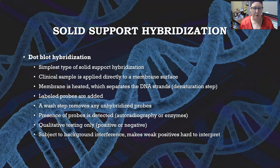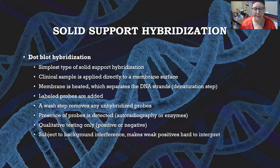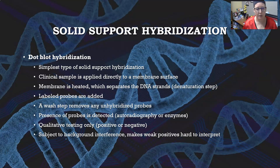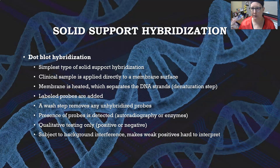For solid support hybridization, we first have dot blot hybridization — the simplest type. The clinical sample is applied directly onto a membrane surface. The membrane is then heated to denature and separate the DNA strands. Labeled probes are then added, a wash step removes any unhybridized probes, and the presence of the probes is detected via autoradiography or the action of enzymes producing a color change or fluorescent signal.